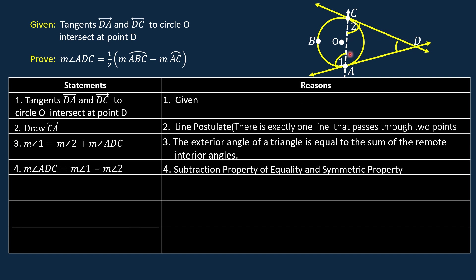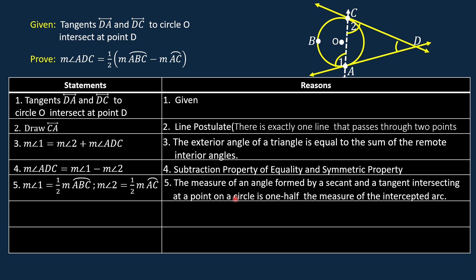Let us look at the figure. The measure of angle 1 is equal to one half the measure of arc ABC, and the measure of angle 2 is one half the measure of arc AC. So for statement number 5, we have those two equations. The reason: the measure of an angle formed by a secant and a tangent intersecting at a point on a circle is one half the measure of the intercepted arc. This is a theorem, and the proof of this theorem is presented in one of the videos in this channel.